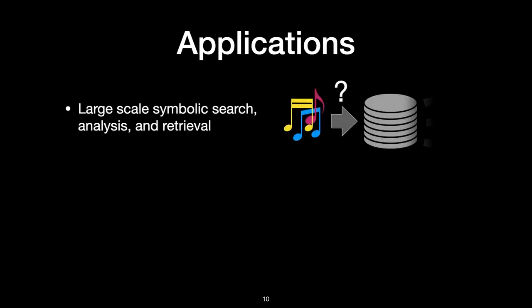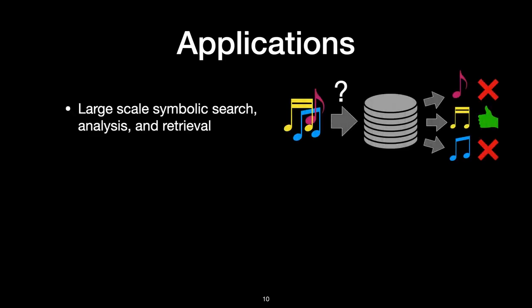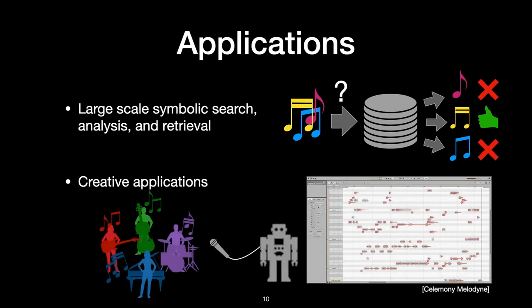A multi-source transcription and separation system like the one proposed here has the potential to open the door for the large-scale transcription of real-world music databases for search, analysis, and retrieval tasks. Examples include massive computational musicological analyses of Spotify's or Deezer's music catalog, or cover song identification that is invariant to tempo changes, key shifts, or varied instrumentation. Our work also paves the way for creative applications like making small changes to a song, for instance altering the notes of any number of instruments in a recording — a kind of melodyne on steroids — or large changes to songs such as musical timbre transfer using an estimated multi-source score.